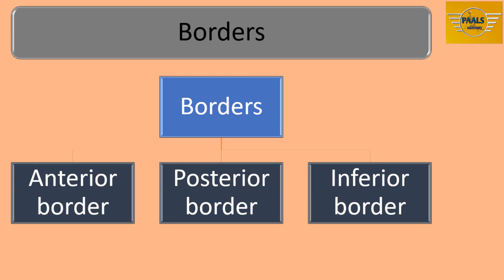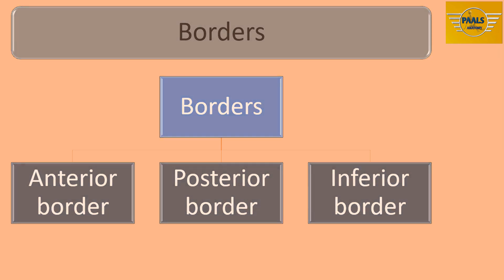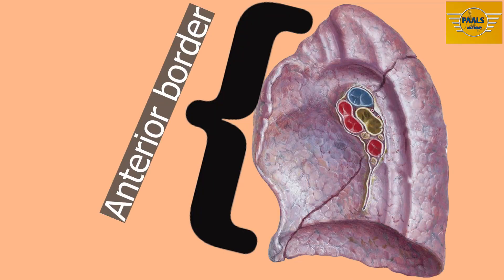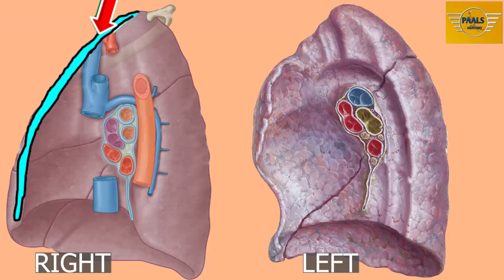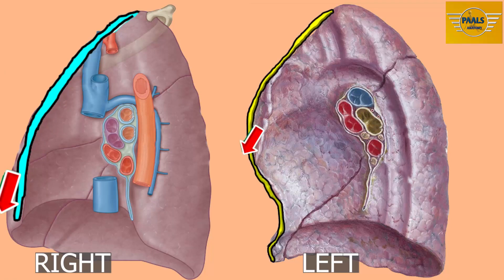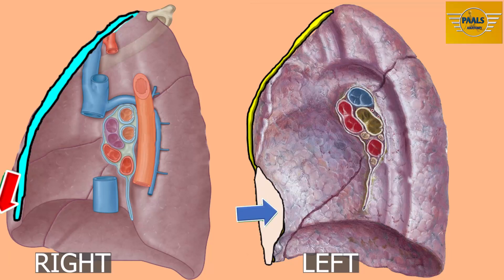There are three borders: the anterior, the posterior, and the inferior borders. The anterior border is thin and shorter than the posterior border. It separates the medial surface from the costal surface anteriorly. For the right lung, this border runs continuously vertical, but in the left lung it is deeply notched posterior to the fifth costal cartilage by the pericardium. The notched area is called the area of superficial cardiac dullness, and percussion of the heart sound in this area gives a dull note.